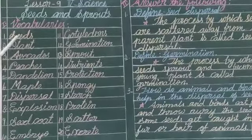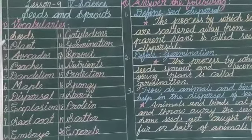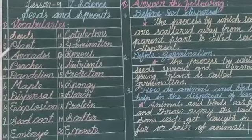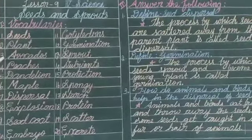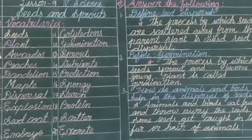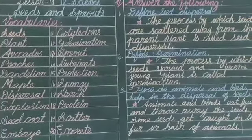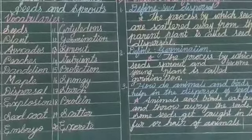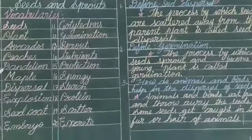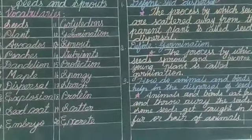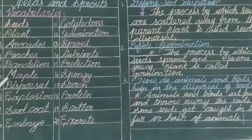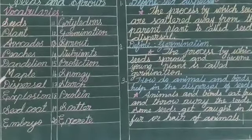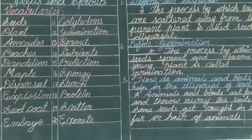Seeds - Vithaikal. Plant - Cheddy. Avocados - Pallavahai. Peaches - Pallavahai. Dandelion - One Serious Edivahai. Maple - Maramvahai.